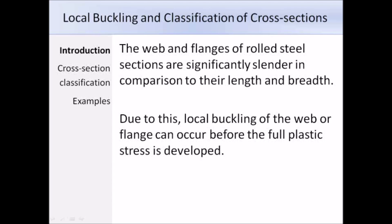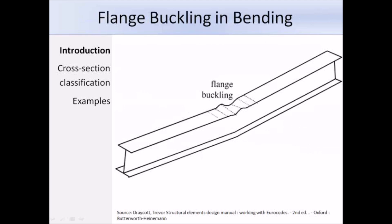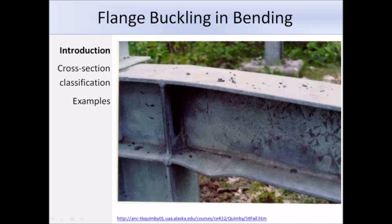The web flanges of rolled steel sections are significantly slender compared to their length and breadth and are prone to distorting, which is commonly referred to as local buckling. This is the diagram showing local buckling of the top flange of a beam. Here is a photograph showing local buckling of a flange in a real-life situation — notice that it is the bottom flange which is buckled.